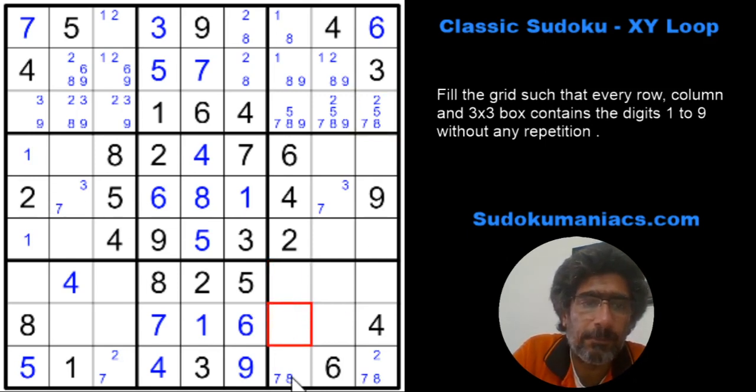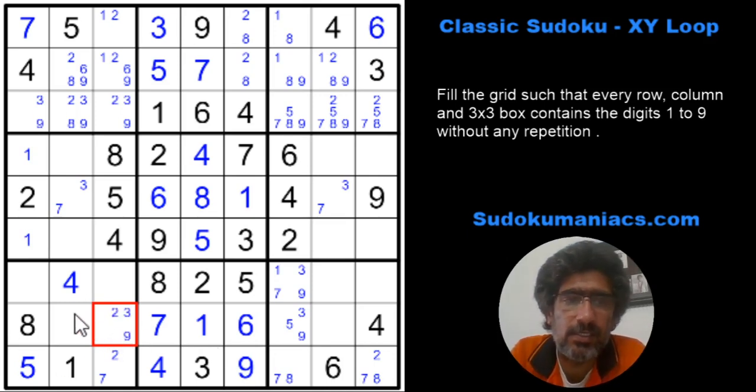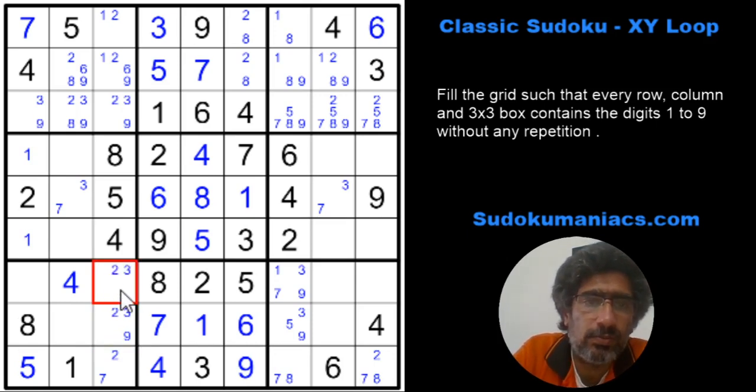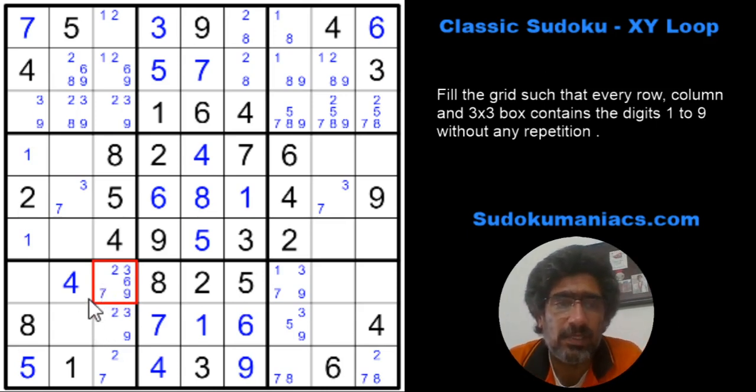What can I have here? I can have 1, 2, 3, 4, 5, 6, 7, 8, 9 in various cells. There's too many pencil marks coming up in too many places. So I'll take a pause here.